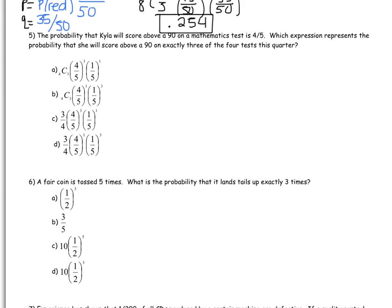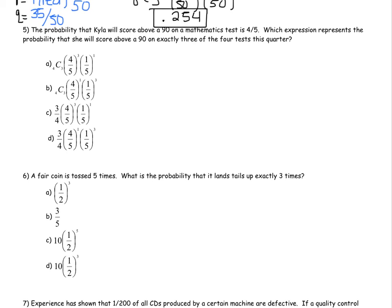Next question. Number 5, the probability that Kayla will score above a 90 on a math test is 4 out of 5. Which expression represents the probability that she will score above a 90 on exactly 3 of the 4 tests this quarter? So if it's a multiple choice question, I always like to do the problem first. So let's do it on our own. N equals, R equals, P equals, Q equals. So how many tests does she have? 4. So N is 4. R is exactly 3. P, the probability that she gets above a 90 is 4 out of 5. What's the probability that she doesn't? 1 out of 5.